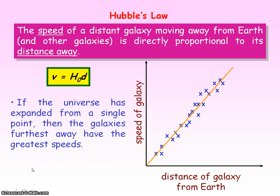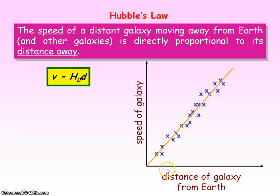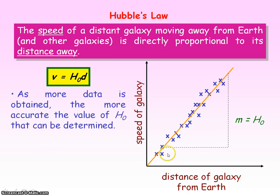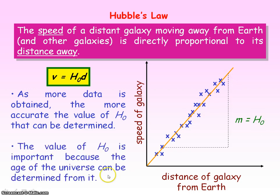Hubble's law provides evidence for the expanding universe from a single point, because if all the galaxies were initially at a single point, then the galaxies that are furthest away must have the greatest speeds. Hubble's constant is found from the gradient of the graph, and as more data is obtained from different galaxies, we can determine a more accurate value for Hubble's constant — which is important because from it we can determine the age of the universe.